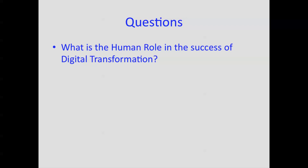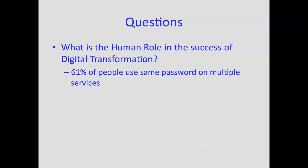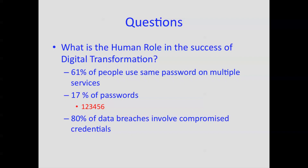And finally, what is the human role in the success of digital transformation? This is core and central — the overriding element. Human behavior will overcome system constraints in practically every situation imaginable. 61 percent of people use the same password on multiple services, and in 17 percent of those instances the password is 123456. 80 percent of data breaches involve compromised credentials — an astonishingly large figure that should give rise to considerable concern by developers and administrators.